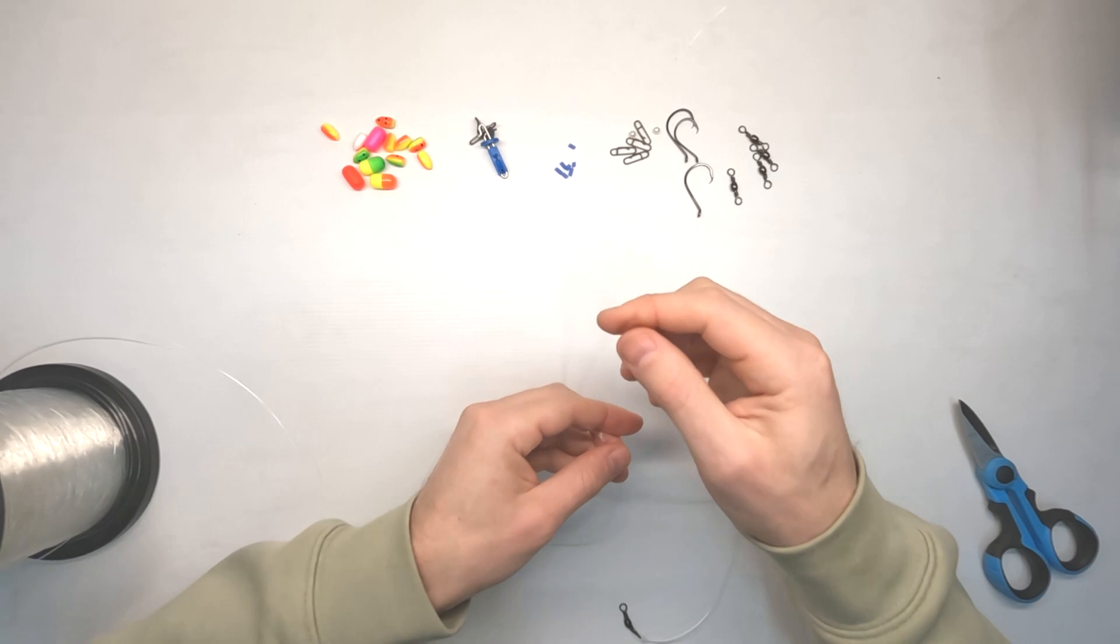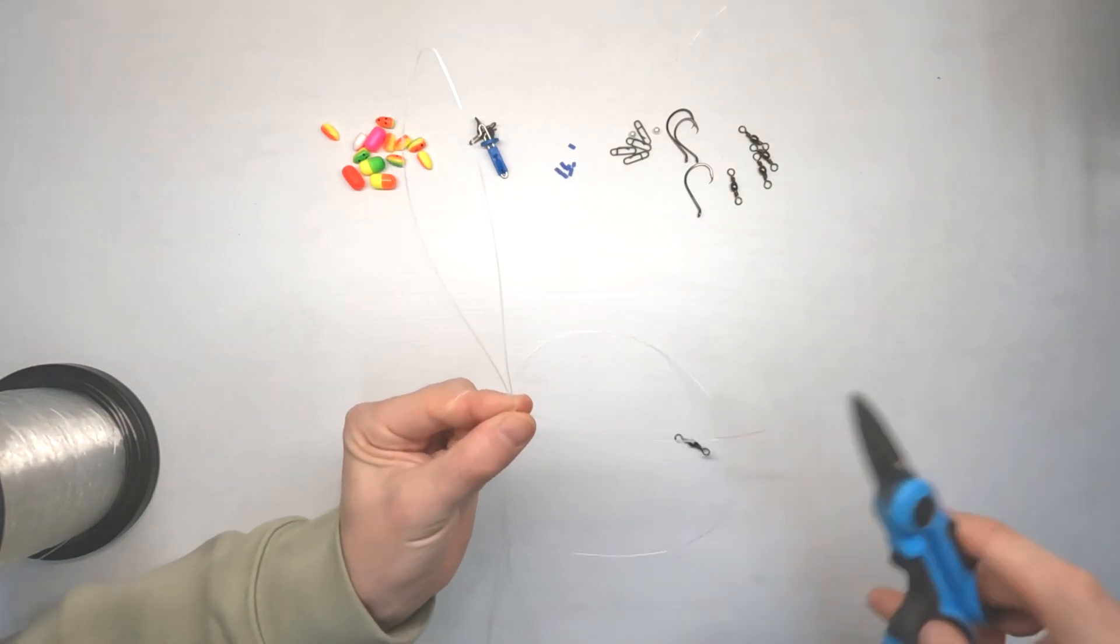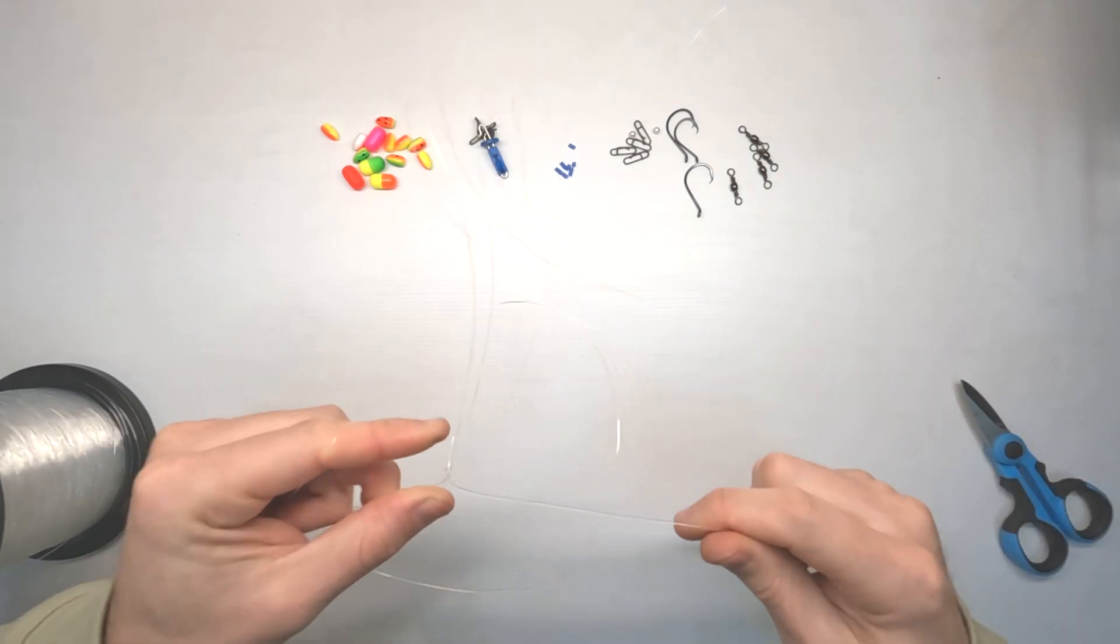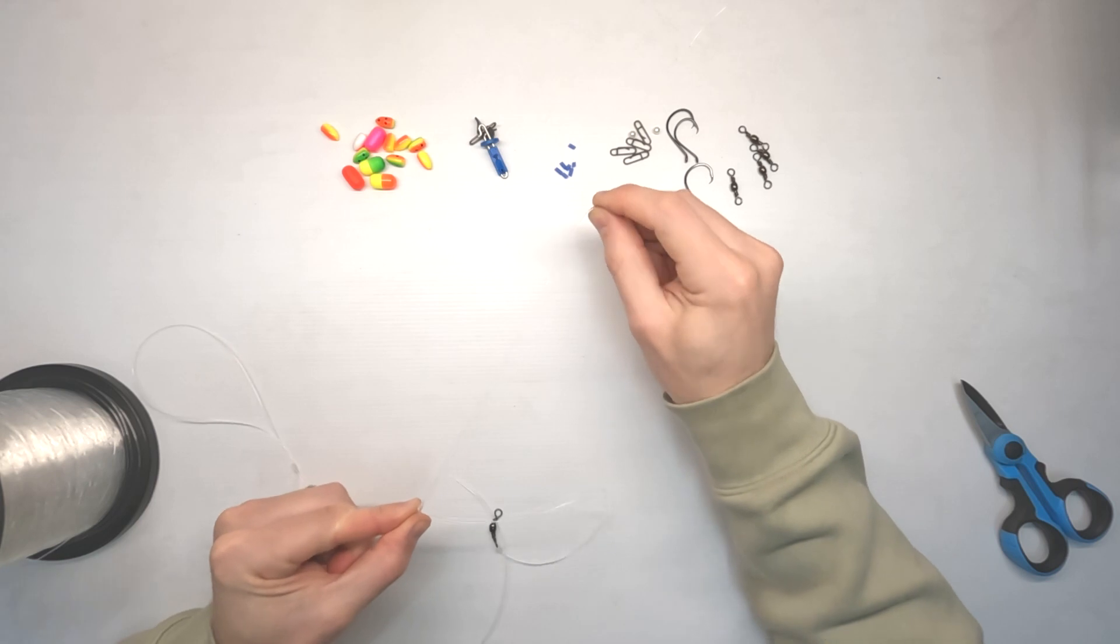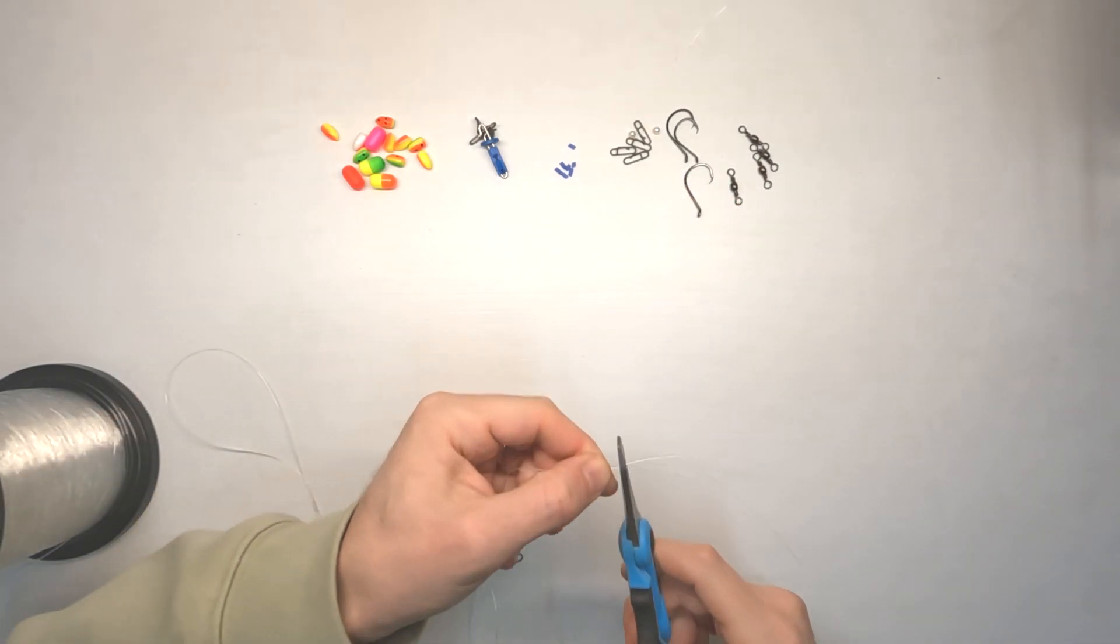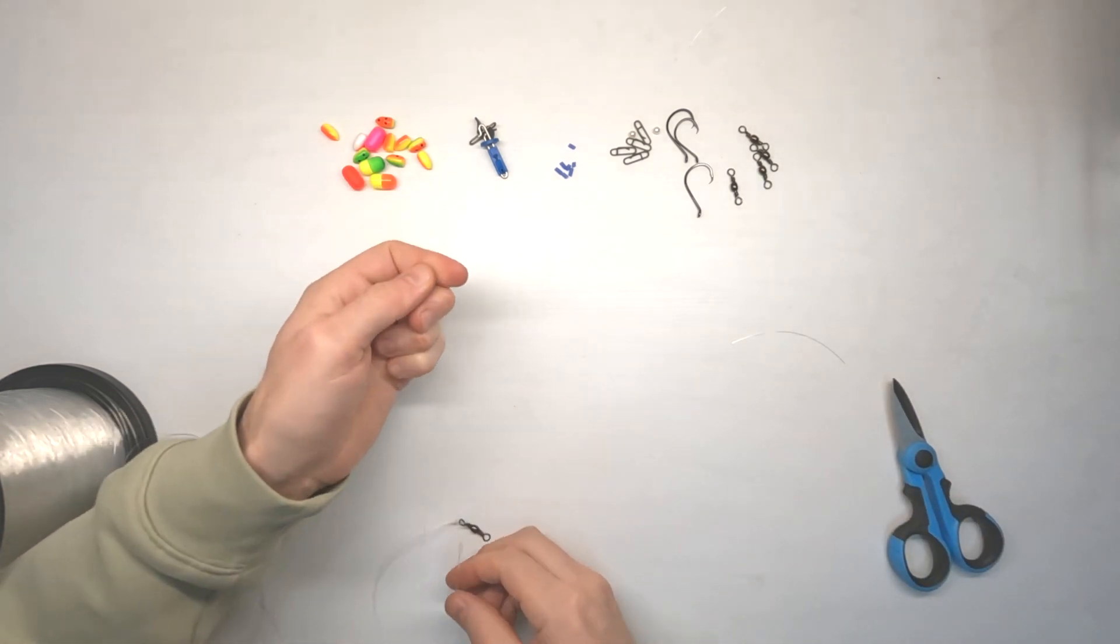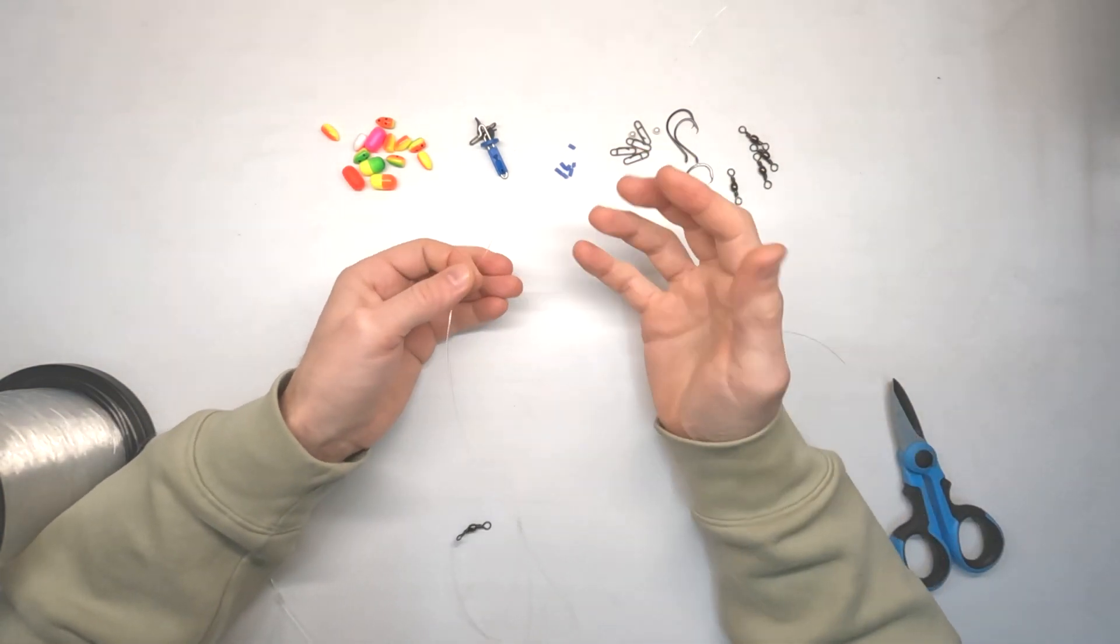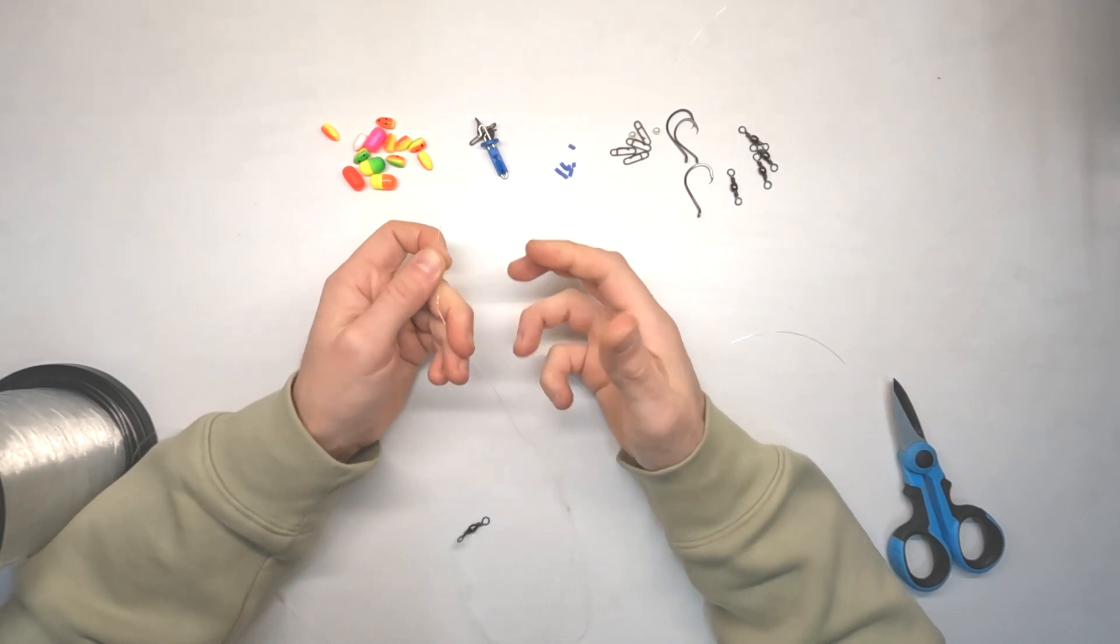Now I like to rather than use a double strand like that and just loop the hook on, I like to have a look at my dropper loop and I'll cut the bottom strand. What I like about this is just having a single strand means it's a lot less obvious to the fish and lies a lot more naturally.